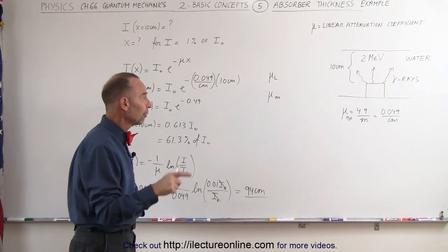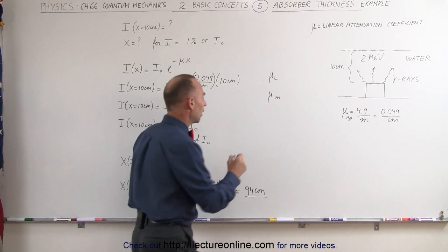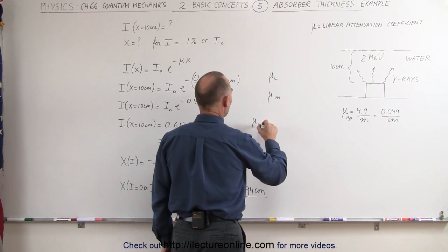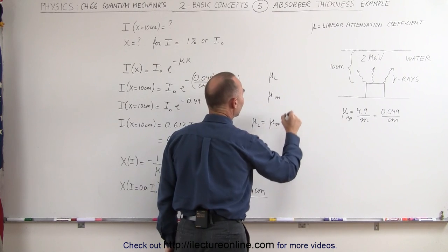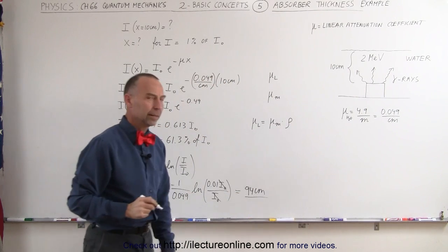That means you need to be able to convert from one to the other. It turns out that the linear coefficient is equal to the mass coefficient times the density of the material.